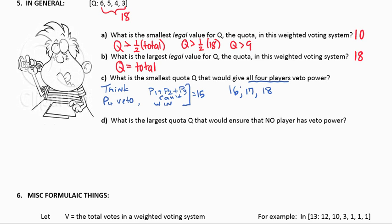The question says, what's the smallest quota that would give them veto power? And the great thing is if you can give player four veto power with three votes, it works the other way. If somebody with three votes has veto power, then definitely somebody with six or five or four would have veto power. So my answer here is 16.